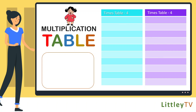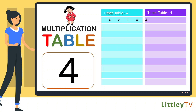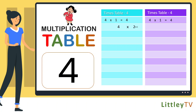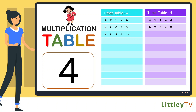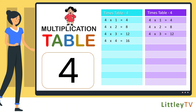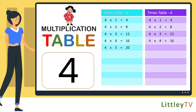Table of 4. 4 ones are 4, 4 twos are 8, 4 threes are 12, 4 fours are 16, 4 fives are 20.